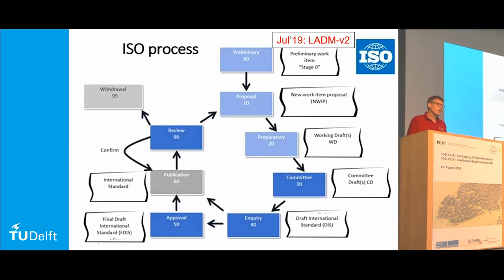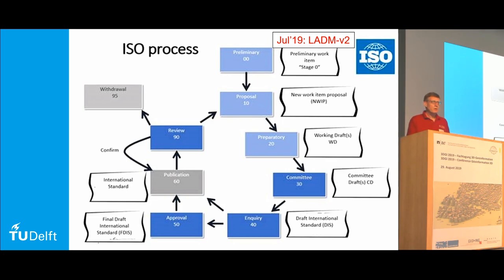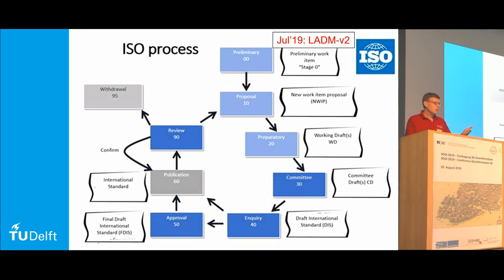To give you an impression of how ISO works: normally it takes four years from start to a finished standard. Switzerland is the ISO country, with the office in Geneva. We are now at stage 0 — a preliminary document where requirements are collected — which was submitted and approved to ISO TC 211, the Geoinformation Committee, last month, July 2019. There are many more steps: a working draft, a draft international standard, and finally in step 60 an international standard — by around 2022.